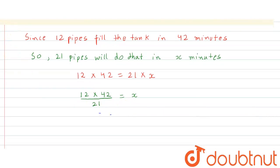We simplify this. This 21 and 42 cut out and this remains with 2, so 12 multiplied by 2. So x is 24 because 12 multiplied by 2 is 24, so 24 minutes.